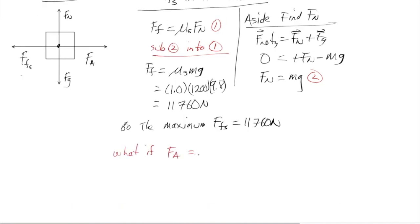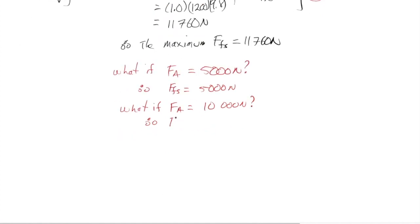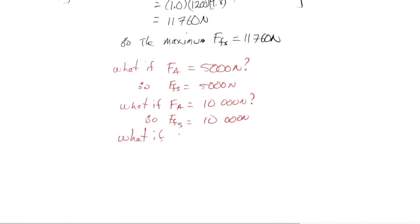What if Fa equals only 5,000 newtons? In this case, the force of friction static would equal 5,000 newtons as well. What if the force applied was equal to 10,000 newtons? Therefore, the force of static friction will also equal 10,000 newtons. What if the force applied is exactly equal to 11,760 newtons? The force of static friction will equal that. But that amount is the final limit.